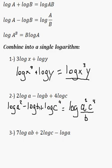Note that the b goes down to the bottom because it's being subtracted, but the c remains on the top, multiplying the a squared because it's being added. Hopefully that makes sense. We have a single logarithm again.